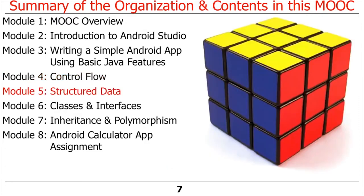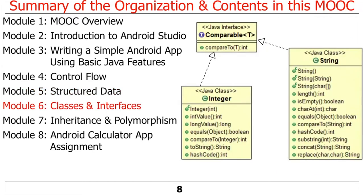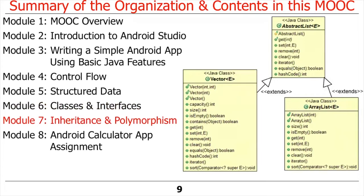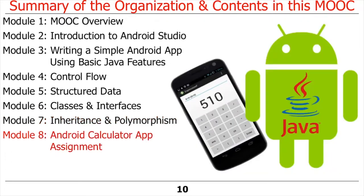Module 5 provides detail on Java features that enable apps to access structured data, including built-in arrays, common classes in the Java Collections Framework such as ArrayList and HashMap, and the ForEach loop. The sixth module covers Java features that group related operations and data into classes and interfaces, including methods, generic parameters, fields, and exceptions. Module 7 examines Java features for customizing existing class behavior via inheritance and polymorphism. Finally, Module 8 guides learners through creating an Android app implementing a simple calculator with adding, subtracting, multiplying, and dividing via text strings and UI buttons.